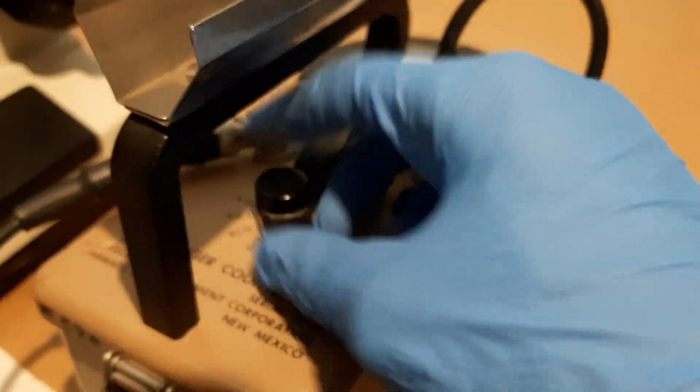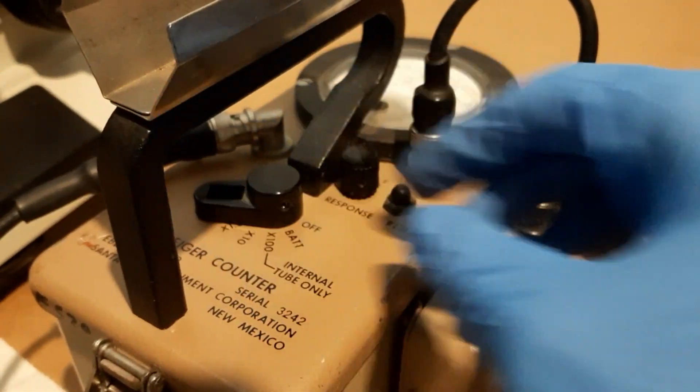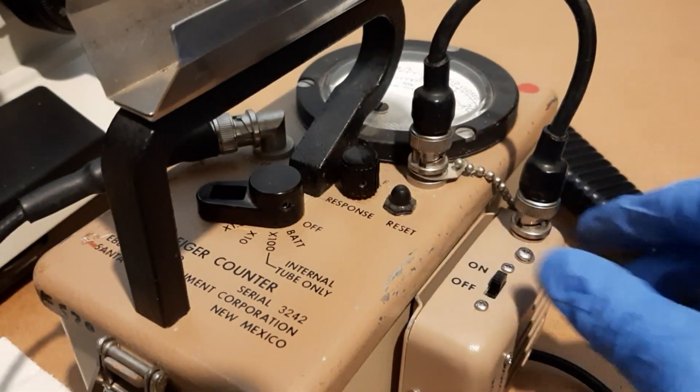Microorganisms respond to many things in their environment, and high levels of EM radiation destroy them. But what would something like alpha radiation do to them?